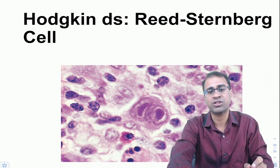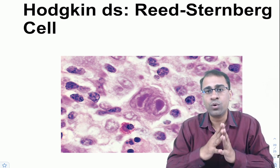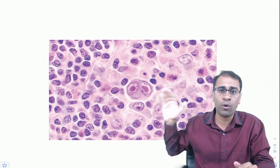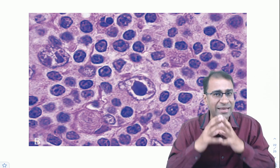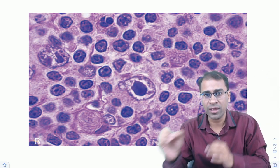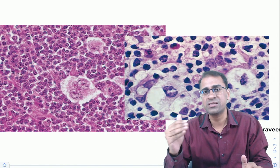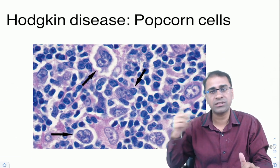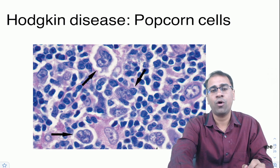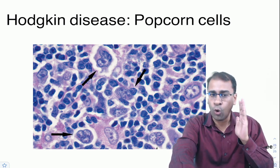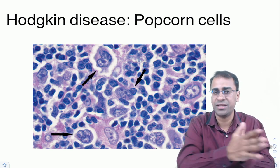Hodgkin's lymphoma is very important. It is characterized by the Reed-Sternberg (RS) cell — a binucleate owl-eye cell often seen with eosinophils. Key variants: the mononuclear variant (lacunar-like) is seen in mixed cellularity, the most common variety in India. Nodular sclerosis is the most common variety worldwide and shows lacunar cells. Nodular lymphocyte predominant Hodgkin's lymphoma (NLPHL) shows popcorn cells. Classical Hodgkin's varieties (mixed cellularity, nodular sclerosis, lymphocyte-rich, lymphocyte-depleted) are all CD15 and CD30 positive, CD20 negative.